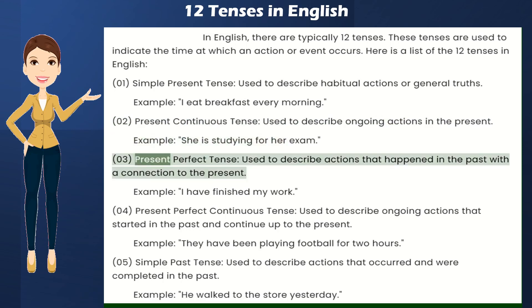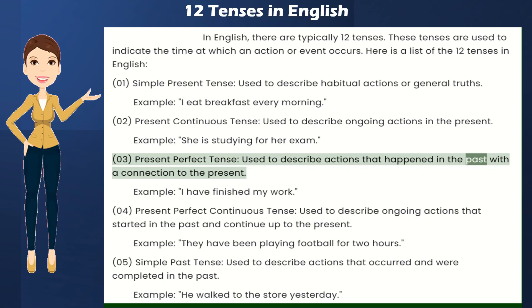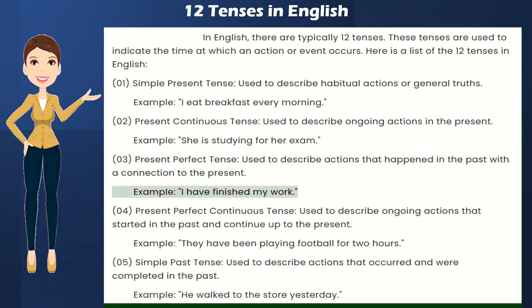Present Perfect Tense — used to describe actions that happened in the past with a connection to the present. Example: I have finished my work.